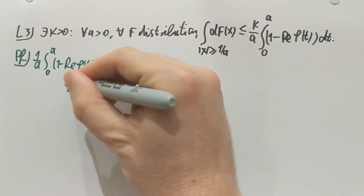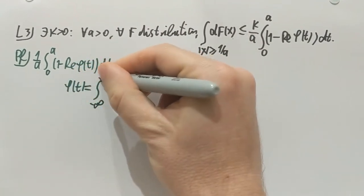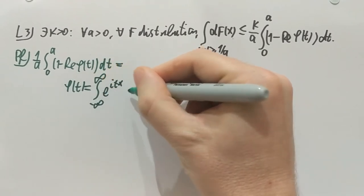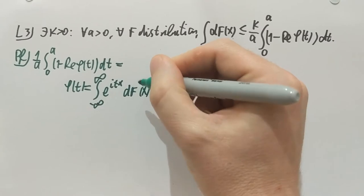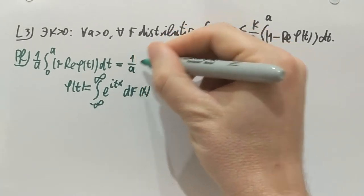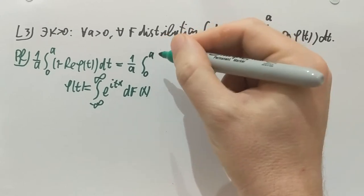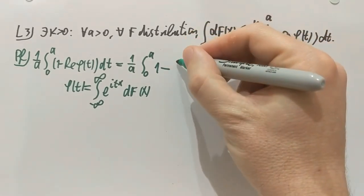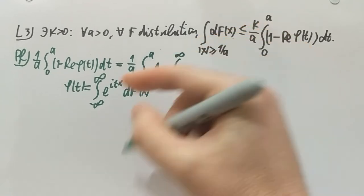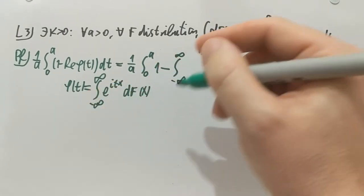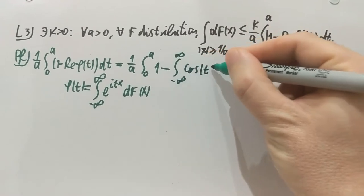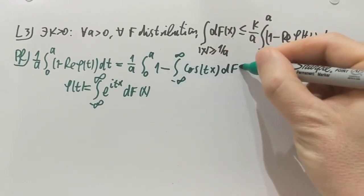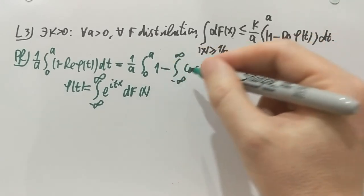What is phi of t? Phi of t is the integral from minus infinity to infinity e to the itx dfx. If I take the real part of it, the real part goes across the integration. It hits the exponential function and what is the real part of e to the itx? It's just cosine of tx. So I'm going to put here the integral of the real part of e to the itx, which is cosine of tx dfx. So that's the real part of phi.